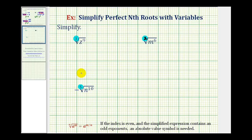The reason the index is so important is a radical reverses the operation of raising an expression or a number to a power. So to simplify the cube root of z to the ninth, we're looking for an expression raised to the third power that would be equal to z to the ninth.